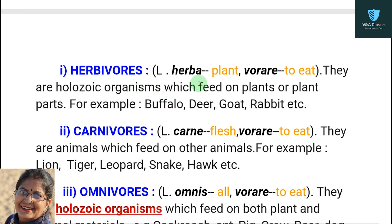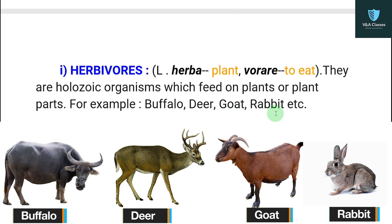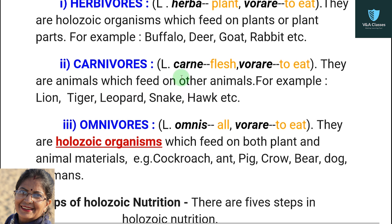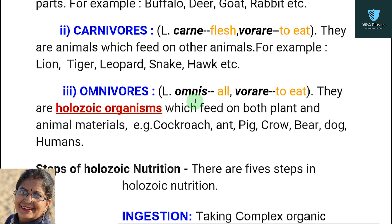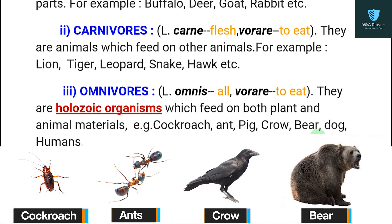Omnivores comes from Latin — 'omnis' means all and 'vorare' means to eat. They are holozoic organisms which feed on both plant and animal materials. Examples include cockroach, ant, pig, crow, bear, dog, and humans.